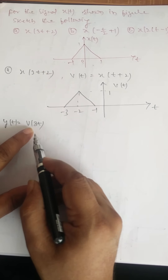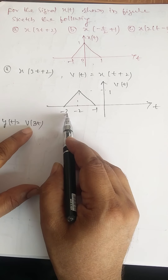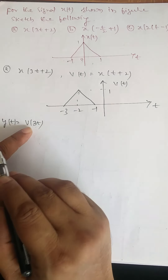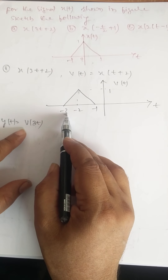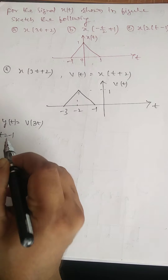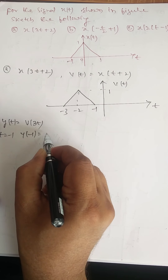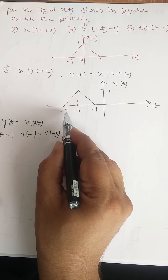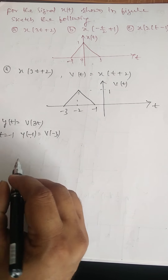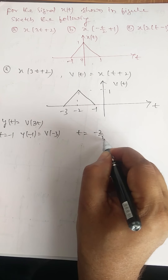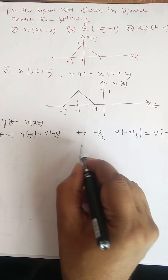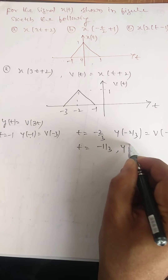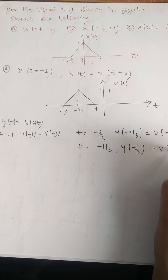Divide the time axis by 3. That means minus 3 by 3 becomes minus 1, minus 2 by 3 becomes minus 2 by 3, and minus 1 by 3. Mathematically, at what value of t will I get minus 3? When t is equal to minus 1, y of minus 1 equals v of minus 3. So what is at v of minus 3 is mapped to minus 1 in the new signal. Similarly, y of minus 2 by 3 equals v of minus 2, and y of minus 1 by 3 equals v of minus 1.